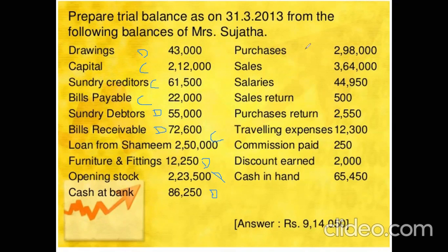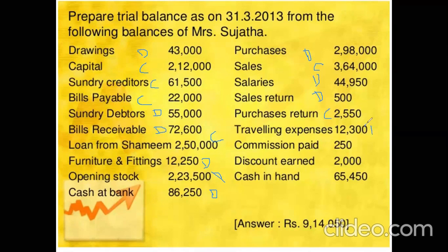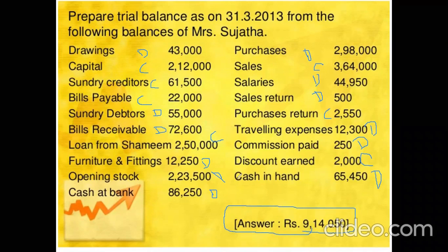Purchases — expense, debit balance. Sales — gain, credit balance. Salaries — debit balance. Sales return — reverse of sales, debit balance. Purchase return — reverse of purchases, credit balance. Travelling expenses — debit balance. Commission paid — expense, debit balance. Discount earned — gain, credit balance. Cash in hand — asset, debit balance. All the accounts are bifurcated into debits and credits, and when the proper statement is prepared with amounts in their respective columns, both sides will have the same total of Rs. 9,14,050.